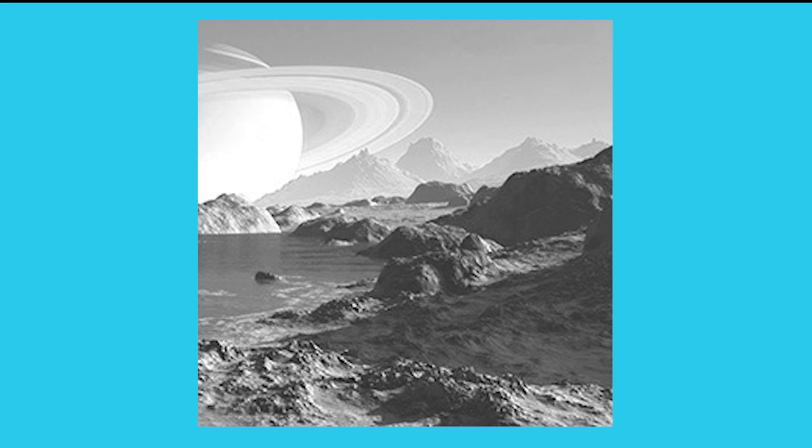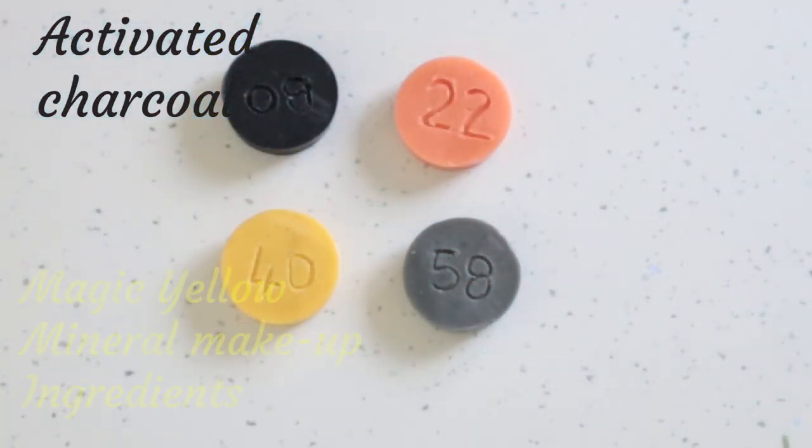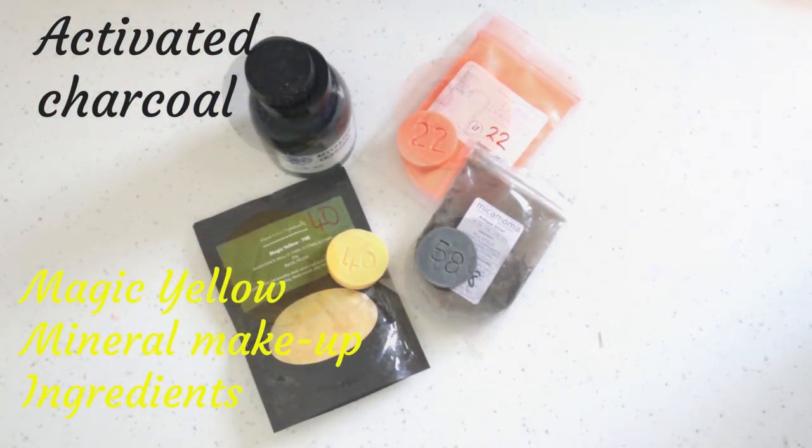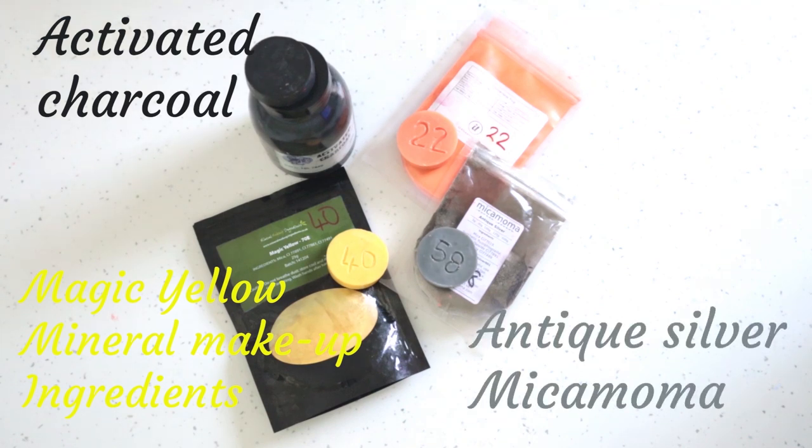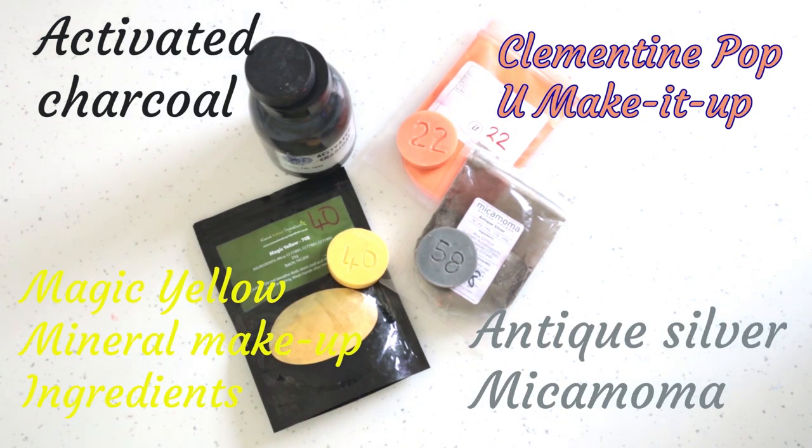I'm going to start my soap by making an embed a day before I actually pour the main body of the soap. So I'm going to be making the planet first of all and the colors I'm going to be using are some activated charcoal, magic yellow from Mineral Makeup Ingredients, antique silver from Micamama and clementine pop from You Make It Up.